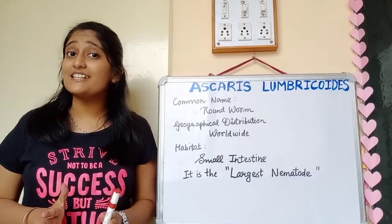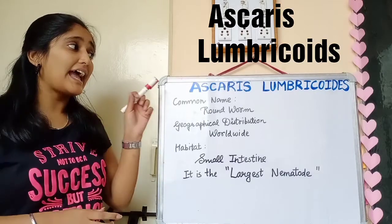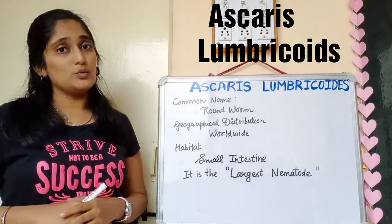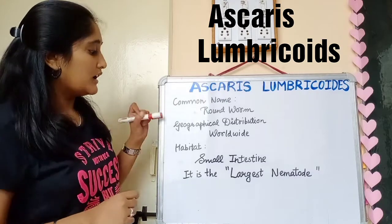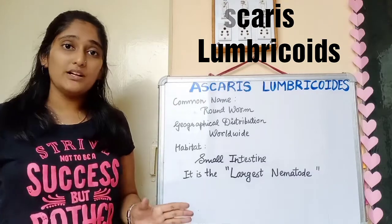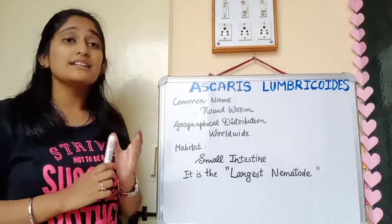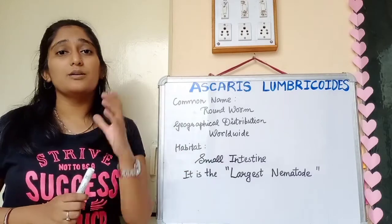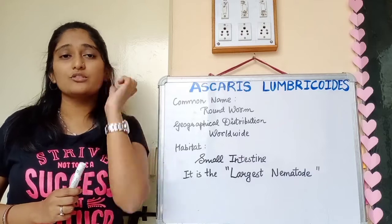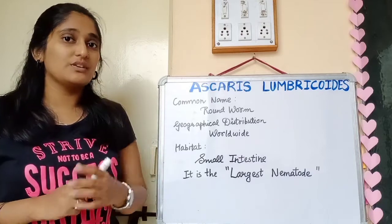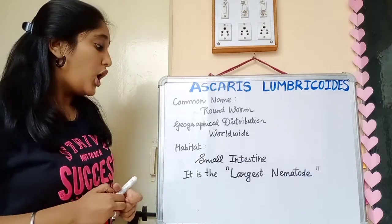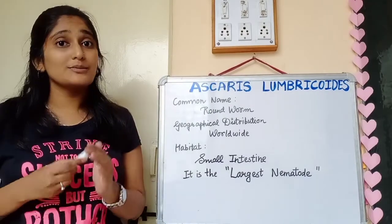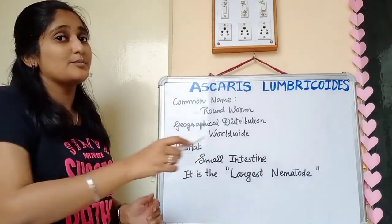In today's lecture we will see Ascaris lumbricoides. Its common name is roundworm. Geographical distribution is worldwide. Its habitat is mostly the small intestine. Its structure resembles an earthworm, and it is also known as the largest nematode — we will see its morphology to understand why.